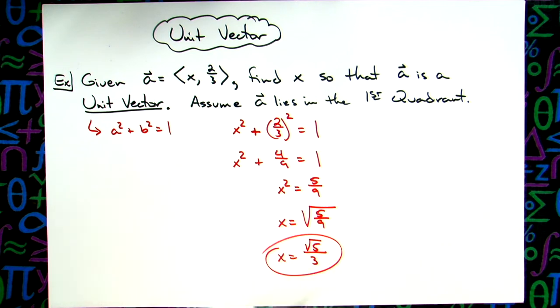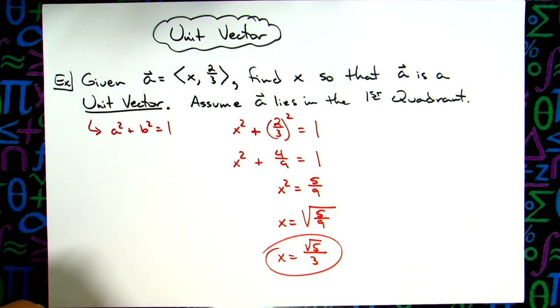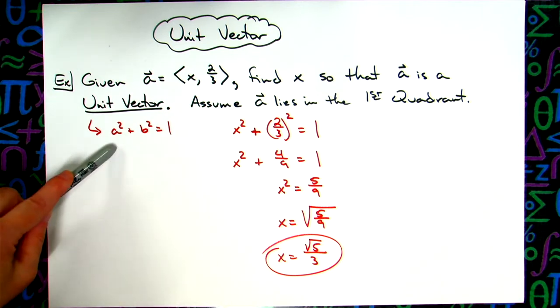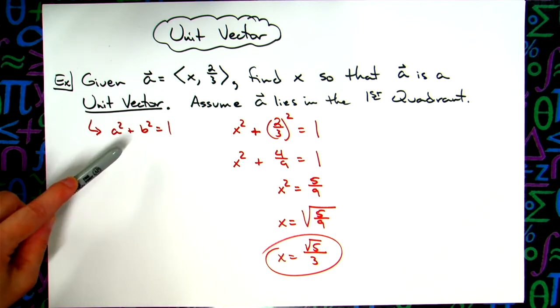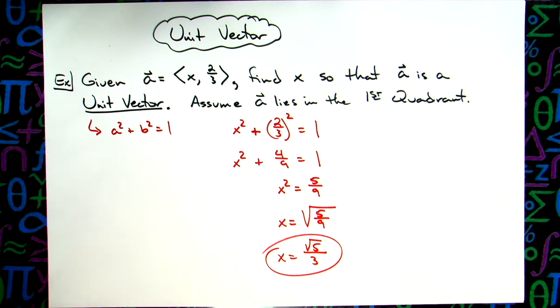So a pretty straightforward question dealing with the unit vector — finding either a or b — assuming that you have a squared plus b squared equals one memorized for your unit vectors.